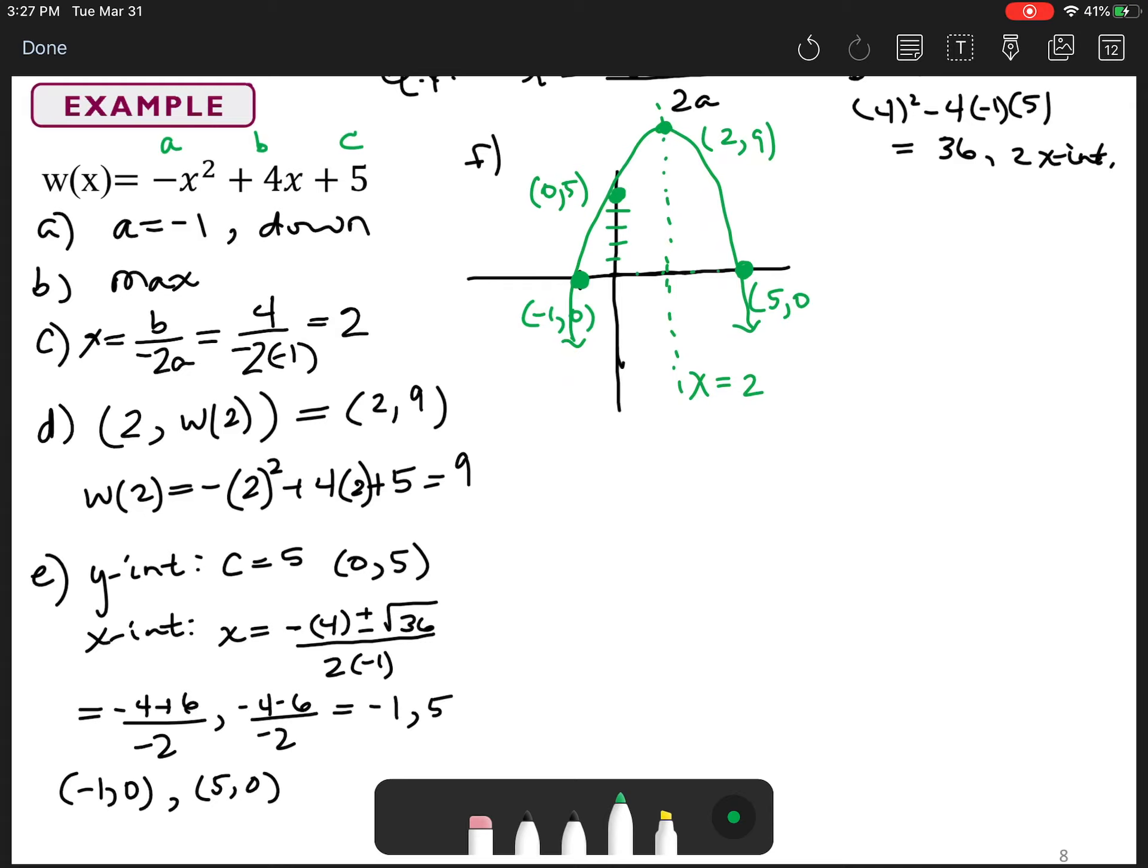Once you get your graph laid out, then it wants you to know the domain of the function. It's a quadratic function. Since it's a quadratic function, the domain of all quadratics is all real numbers. In interval notation, negative infinity to positive infinity. And we almost that team, we almost there.